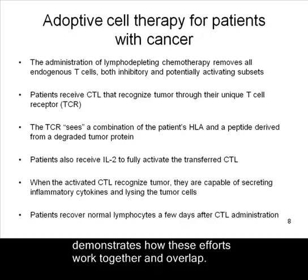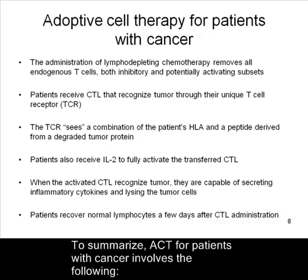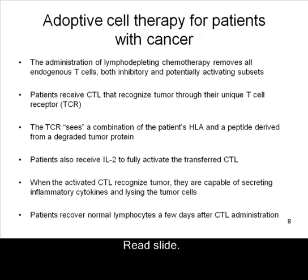To summarize, ACT for patients with cancer involves the following. The administration of lymphodepleting chemotherapy removes all endogenous T cells, both inhibitory and potentially activating subsets. Patients receive CTL that recognize tumor through their unique T cell receptor. The TCR sees a combination of the patient's HLA and a peptide derived from a degraded tumor protein. Patients also receive IL-2 to fully activate the transferred CTL.